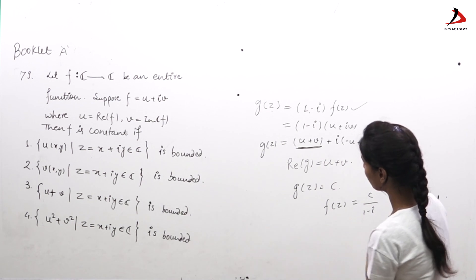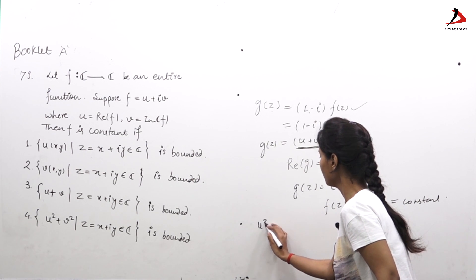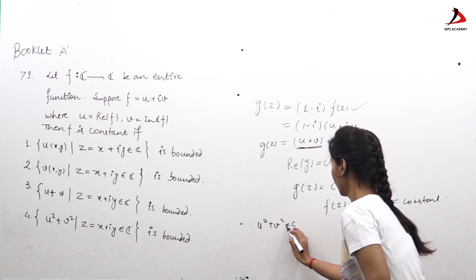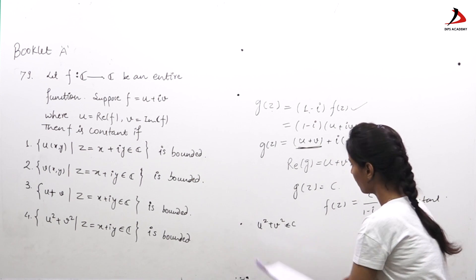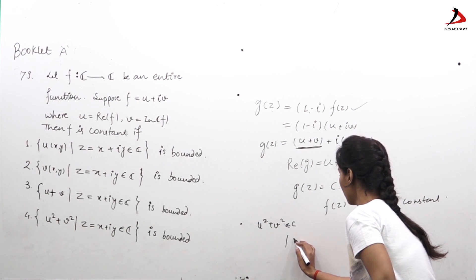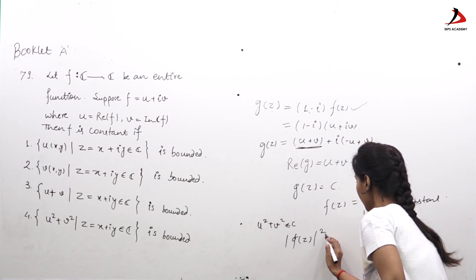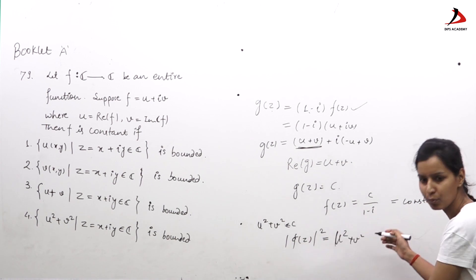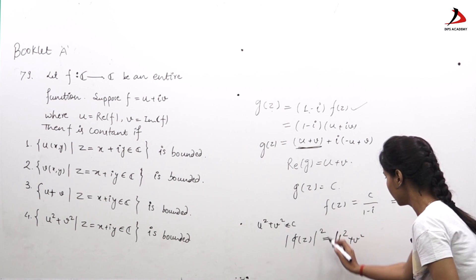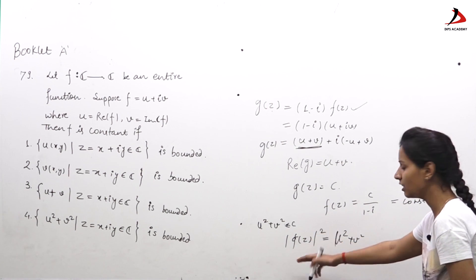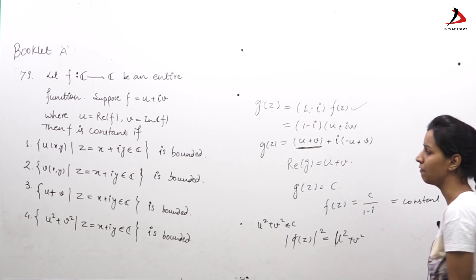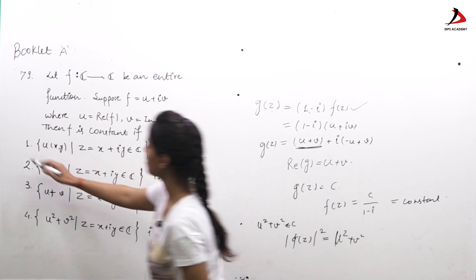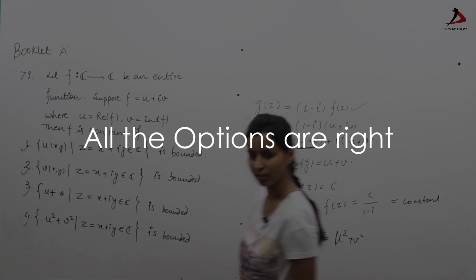For option 4, u² + v² is bounded. Observe that u² + v² = |f(z)|², so |f(z)| = √(u² + v²) is also bounded. This means the modulus of the function is bounded, and since f is entire, by Liouville's theorem f is constant. So in this question, all four options — one, two, three, and four — are correct.